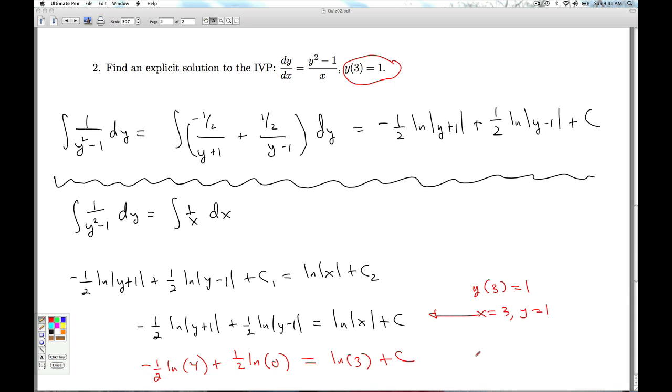And we're supposed to use this equation to solve for c. And what's wrong with this equation, folks? This is wrong with that equation. You can't take the natural log of zero.